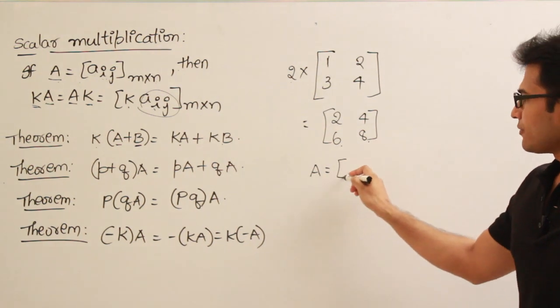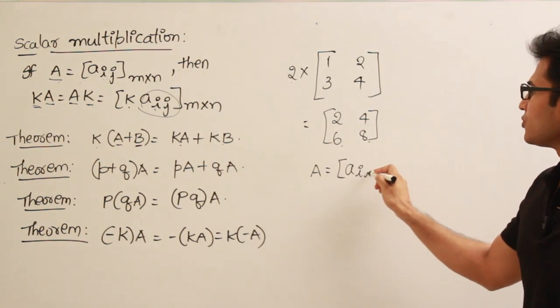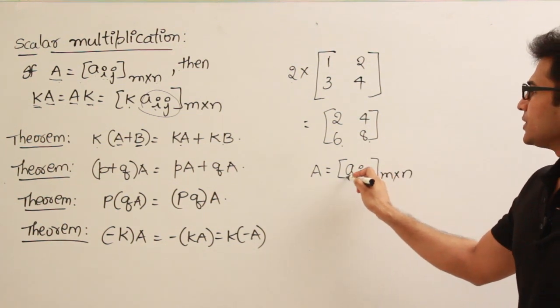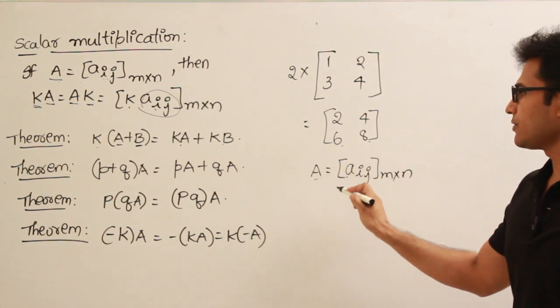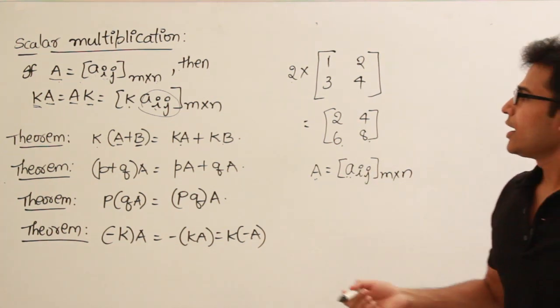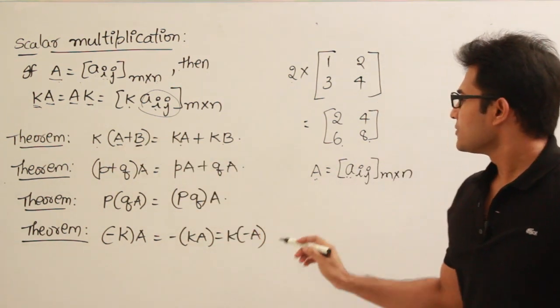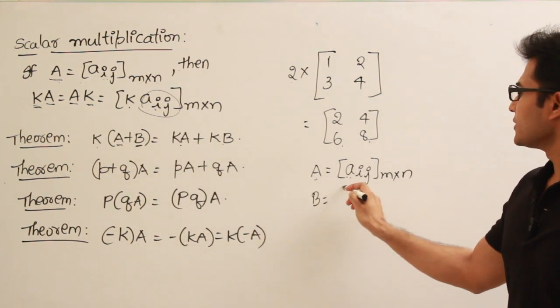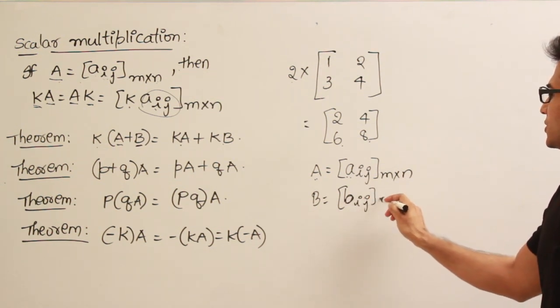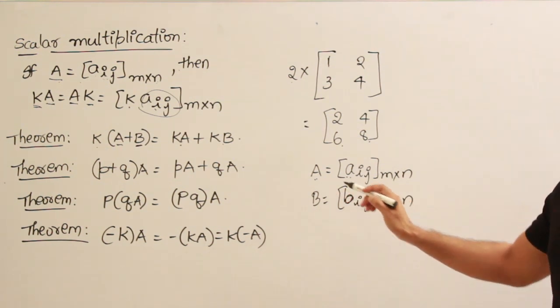See, if A is the matrix, it's going to be represented this way. Small a means each element of the matrix. Capital A is the matrix itself and small a means each element of the matrix. And now if I write A plus B, similarly we can think of B also like this. So small b means each element of the matrix B.